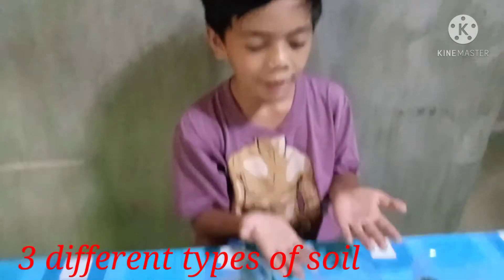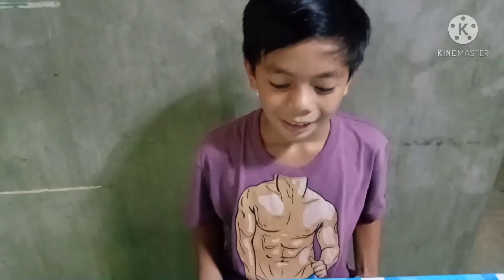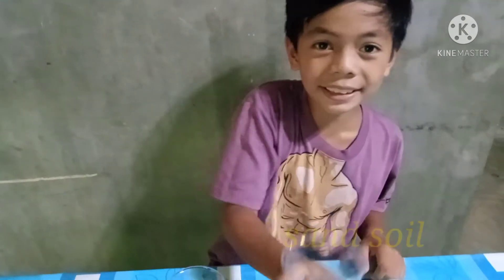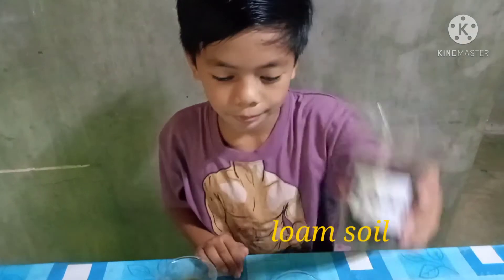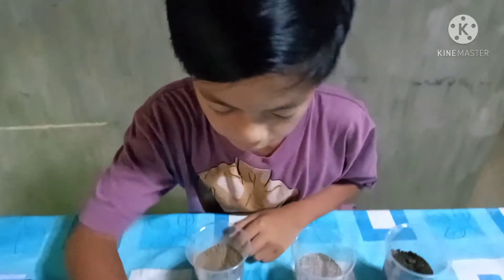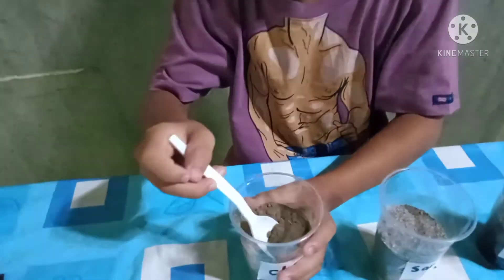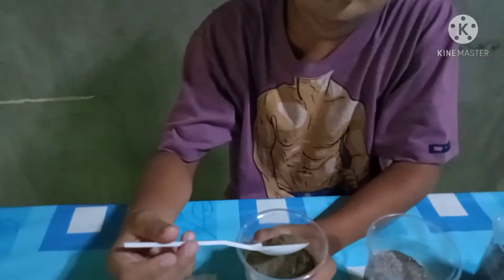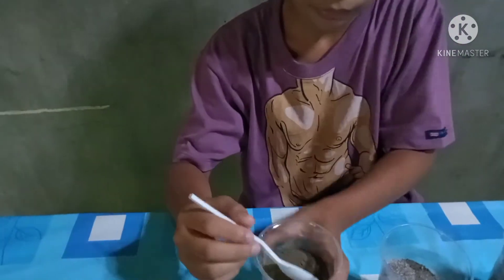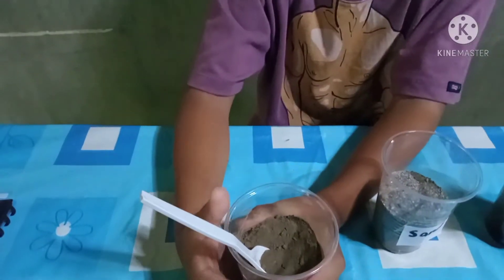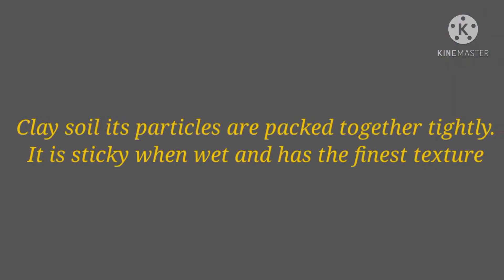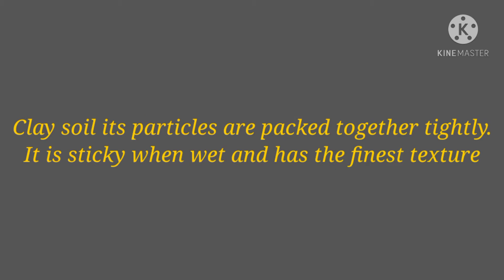I have here three different types of soils. First is clay soil. This is what it looks like when it is dry — its color is light brown. Its texture is very fine. Clay soil particles are packed together tightly. It is sticky when wet and has the finest texture.